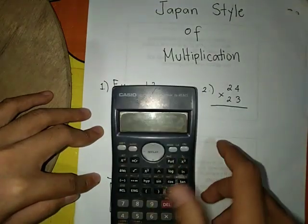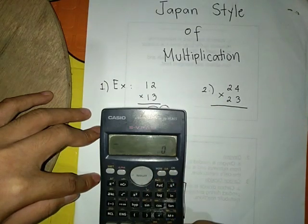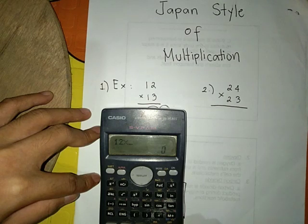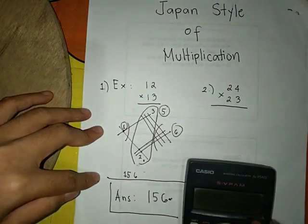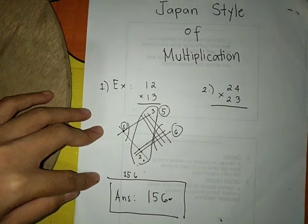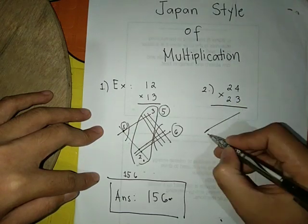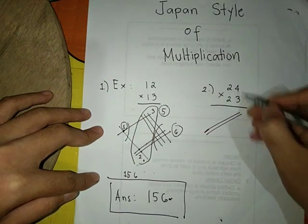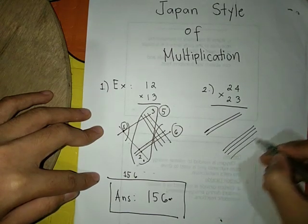Check in calculator: 12 times 13. Yeah, the same. Next here, two means two lines, four means four lines.